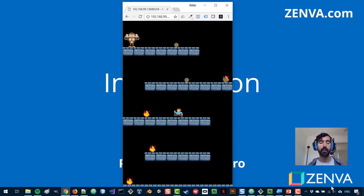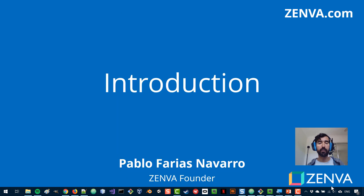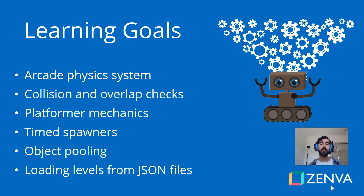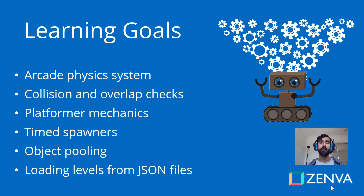This game runs on the browser, as you can see here. The main learning goal of this course is that we will be building platformer mechanics using a physics system called Arcade, which comes with the Phaser framework. We'll incorporate things such as collision detection, and also the barrels are being generated at a certain interval, so we are going to go over how to do that, along with some more advanced techniques such as object pooling, which is when you recycle objects instead of creating and destroying new objects all the time.